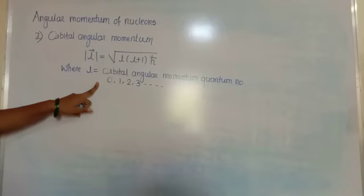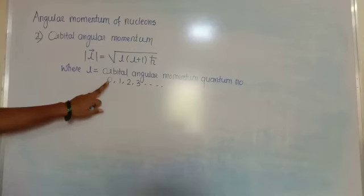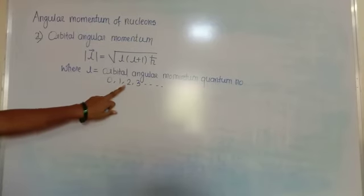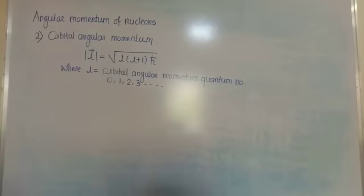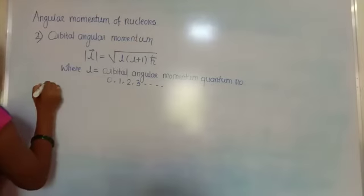Here l is the orbital angular momentum quantum number, which takes integral values only: 0, 1, 2, 3, and so on.